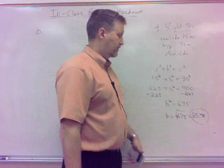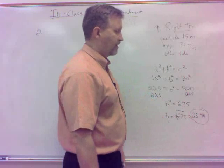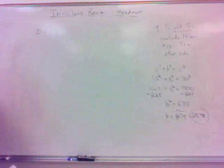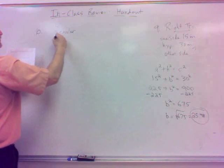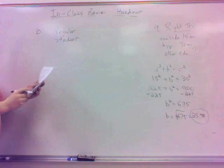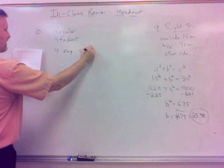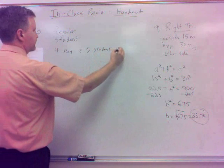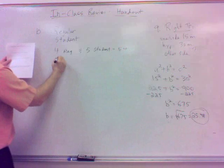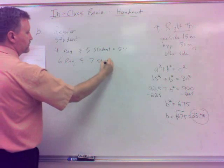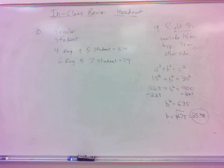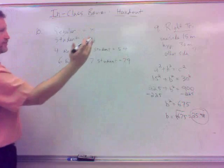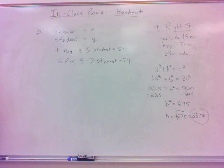Okay. Number 10. Remember this one, the ticket problem. We did one similar before. We've got two types of tickets. We've got regular tickets at regular price and then student tickets. It says we've got four regular and five student costing 54. Six regular and seven student cost 79.